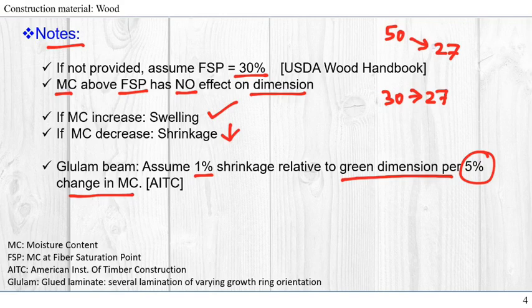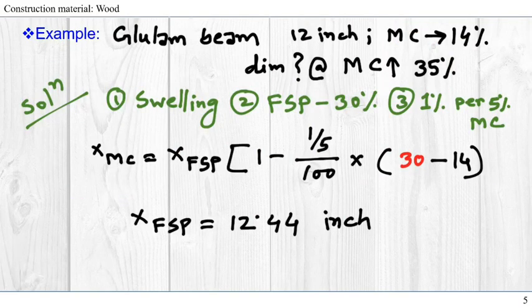Now, let's do an example using the general formula that we just derived. In a glulam beam, the manufactured dimension is 12 inches. At that moment, the moisture content was 14%.